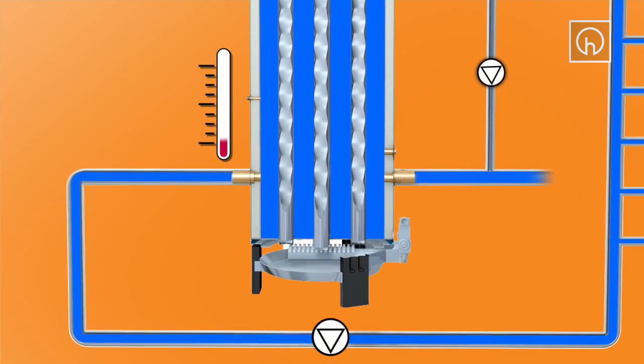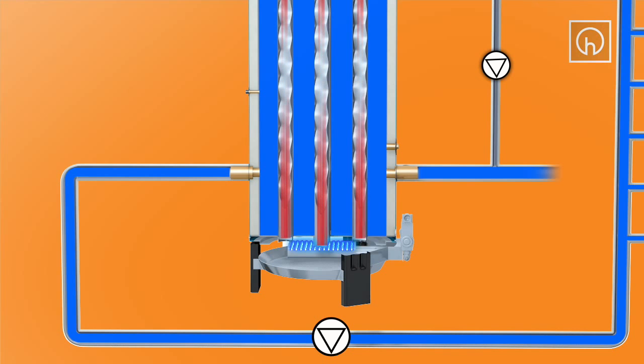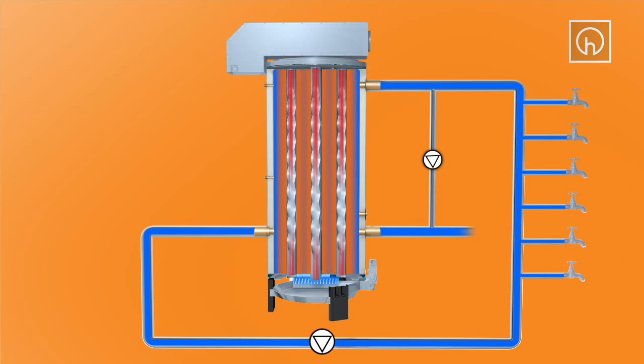The temperature sensor within the tank signals that the water is cold and ignites the burner to start heating. Hot gases from the burner pass up the tubes and the temperature of the water close to the tubes increases. A flue baffle within each tube improves heat transfer, increasing operating efficiency.